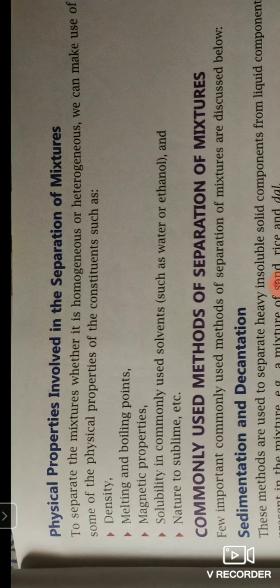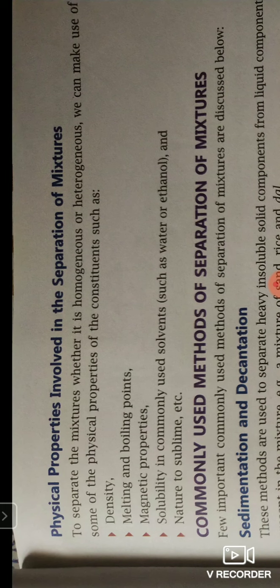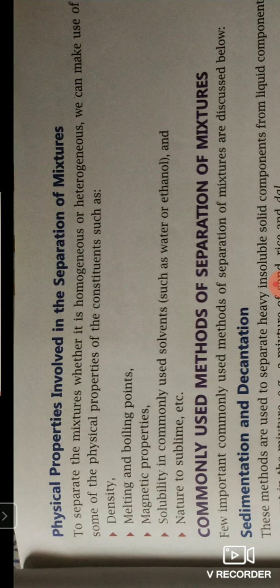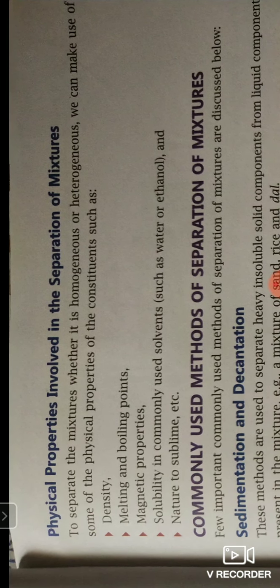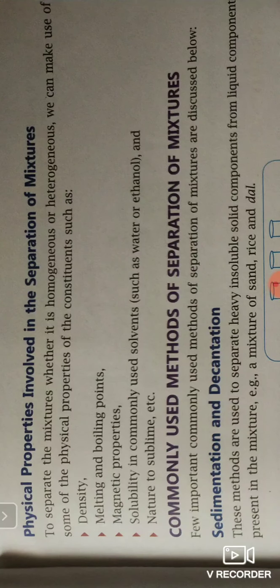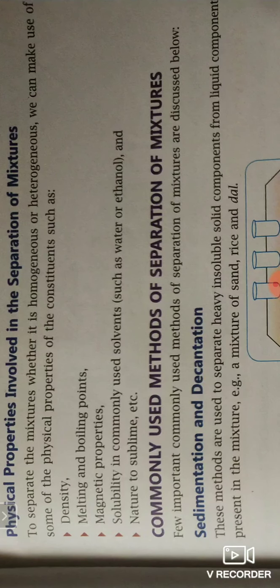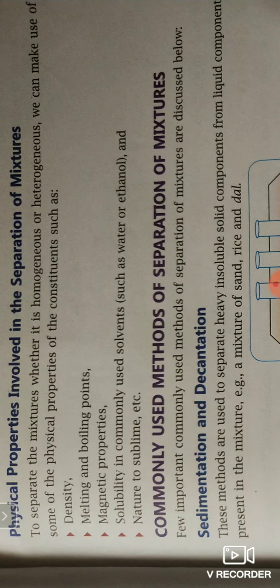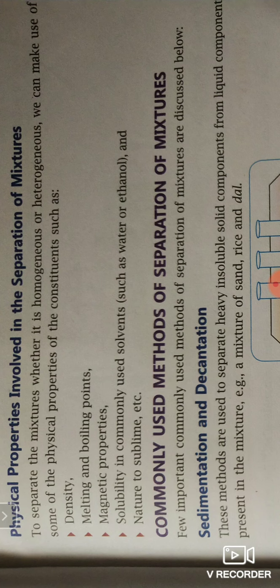To separate mixtures, whether homogeneous or heterogeneous, you have to understand certain physical properties of the constituents. The physical properties we are going to consider are: density, melting point and boiling point, magnetic property, solubility in common solvents such as water or ethanol, and the nature to sublime. Please remember — sublime means a solid getting converted directly into the gaseous state without going to the liquid state.